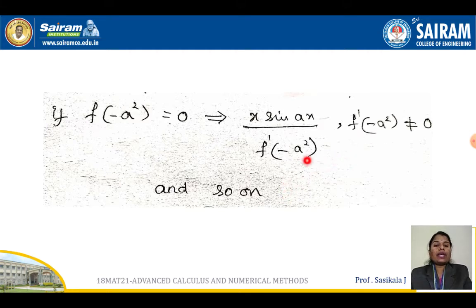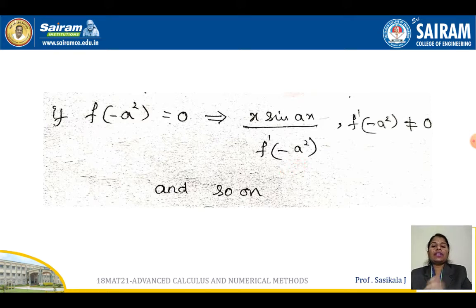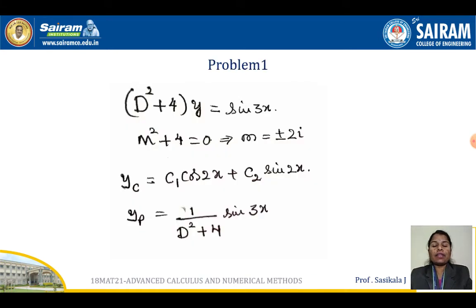If the denominator equals 0, similar to what we did in the first type, you multiply x to the numerator and take a differentiation of the denominator, then again replace d squared equal to minus a squared and check whether it is not equal to 0. If it still gives 0, you again multiply by x and take differentiation, giving x squared in the numerator and f double dash of d squared in the denominator. Remember: you replace only d squared — you are not supposed to replace by d.